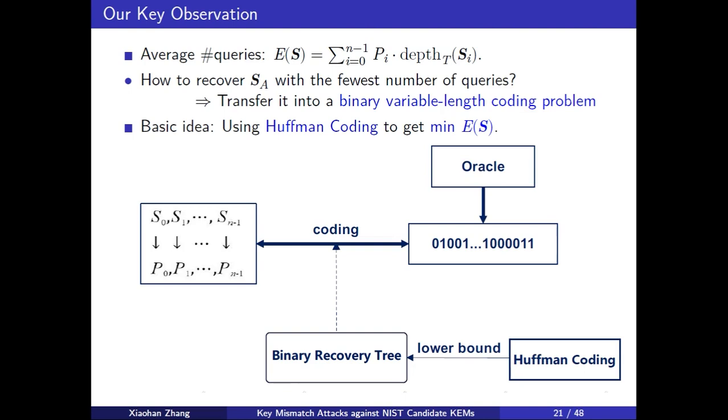But there are many binary recovery trees in practical attacks, and we need to find an optimal binary recovery tree. So we all know the method is using Huffman coding. So our basic idea is using Huffman coding to get the lower bound of average number of queries. That is, yes.